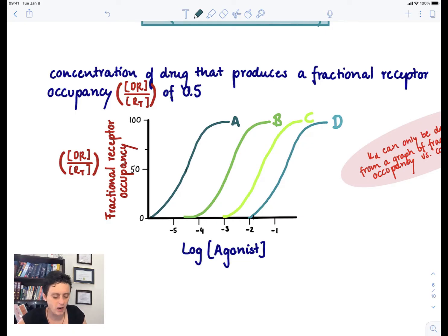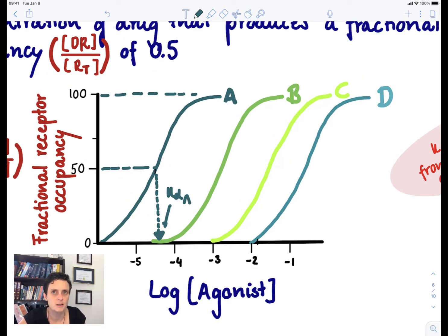First of all, this graph has to show DR by the total number of receptors. I cannot get this KD from a graph that shows me the effect of a drug versus the concentration. I need the receptor occupancy. So what I'm going to do is I'm just going to go to 50% of the occupancy, and then this would be the concentration of drug that occupies 50% of the receptors.